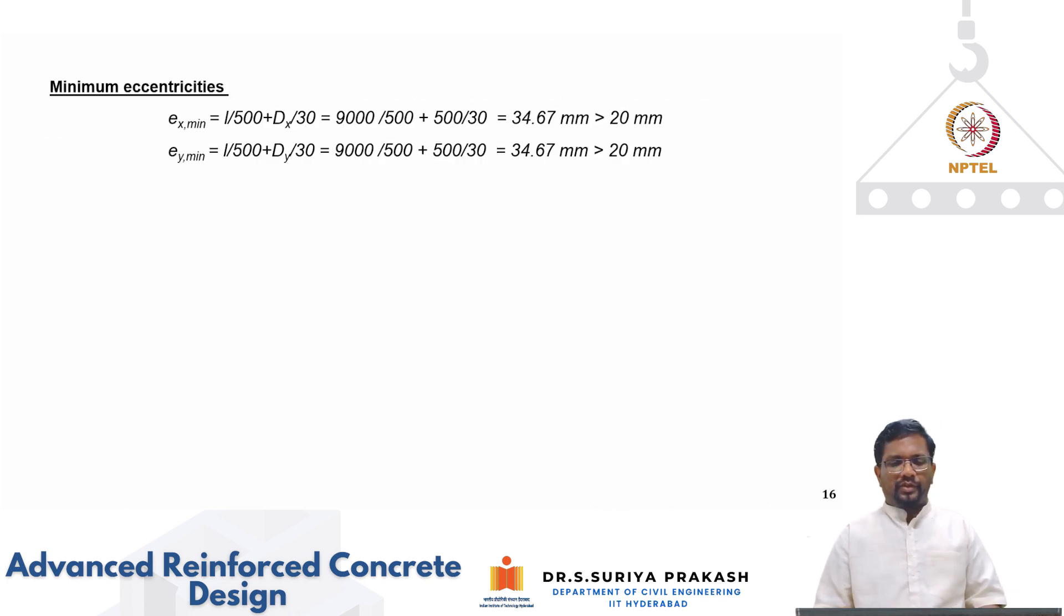So let us see now how do we do. So again we have to check for minimum eccentricities and you know the formula for minimum eccentricities: sl by 500 plus bx by 30, you get 34.67 which has to be greater than 21. Again about the other axis also same because we are dealing with square column with same effectiveness.